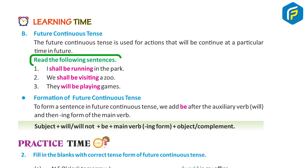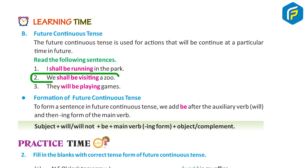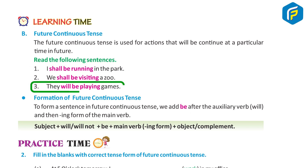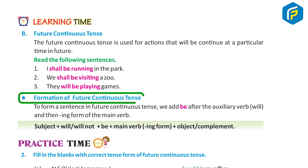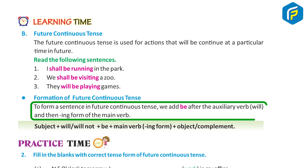Examples of Future Continuous Tense: 1. I shall be running in the park. 2. We shall be visiting a zoo. 3. They will be playing games.